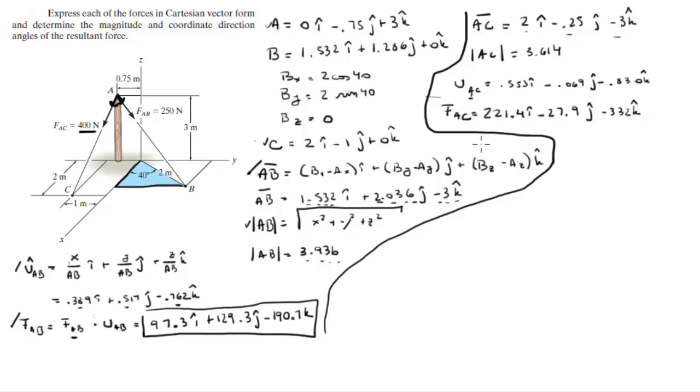Now that you have this, you can find the resultant force by adding F of AB plus F of AC. Basically add the x with the x, the y with the y, and the z with the z.